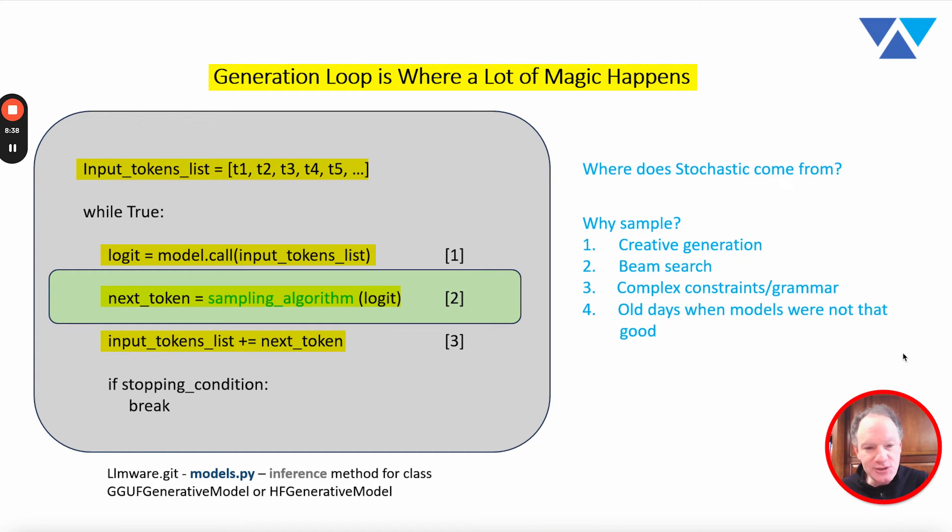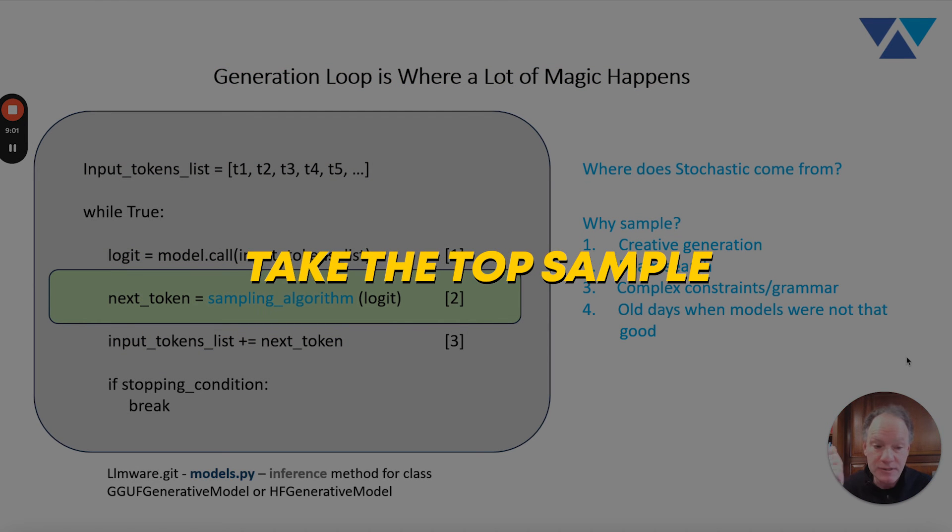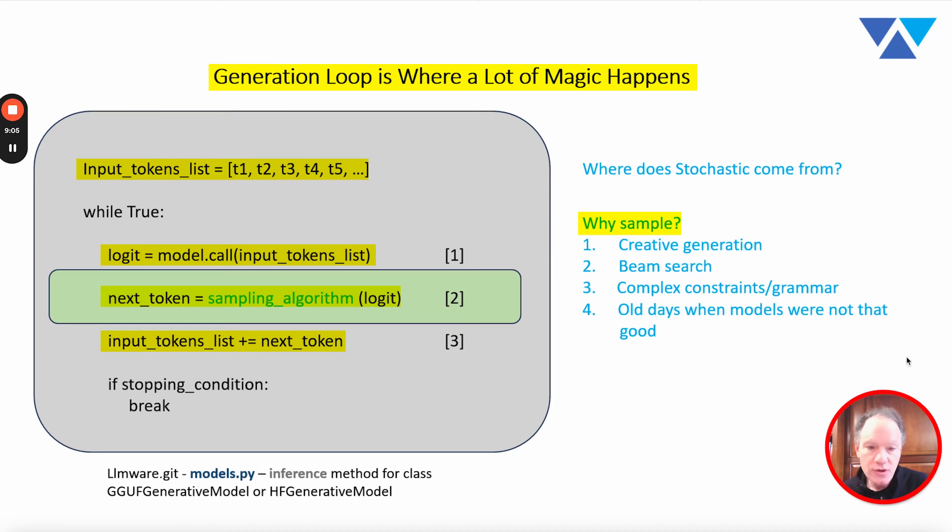Now, a really good and interesting question might be, why do we do that? Why do we sample at all? You might say, well, this probability distribution simply take the maximum argument. Take the top, the index of the array element that has the largest value. That is, in effect, what the model is telling us. Take the top sample, so to speak. Why don't we do that always? Well, there are several good reasons for why we would want to sample from that probability distribution, meaning randomly, based on what that probability distribution looks like, select different tokens, not just the top token.